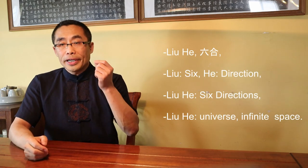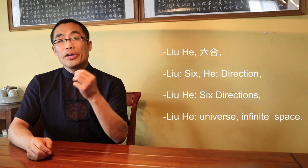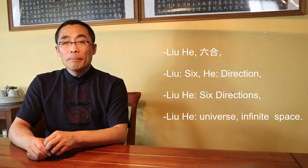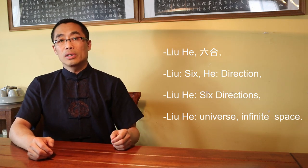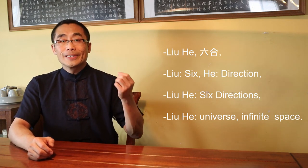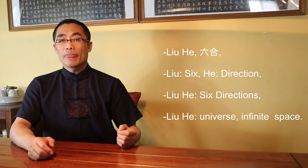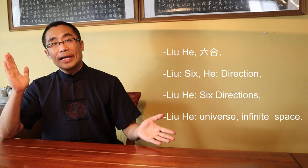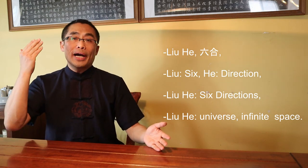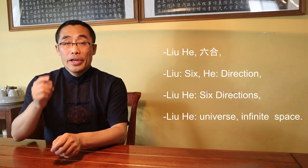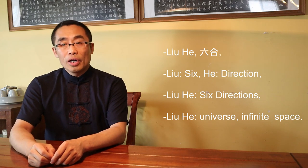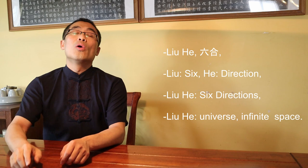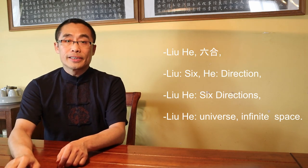In his book, he was the first person who used the term Liu He. So, what is Liu He? In Chinese, Liu means Six, He means direction. Together, Liu He means Six Directions, including Upward, Downward, Left, Right, Front, and Back. So, in ancient China, the term Liu He used to mean the universe or the infinite space.